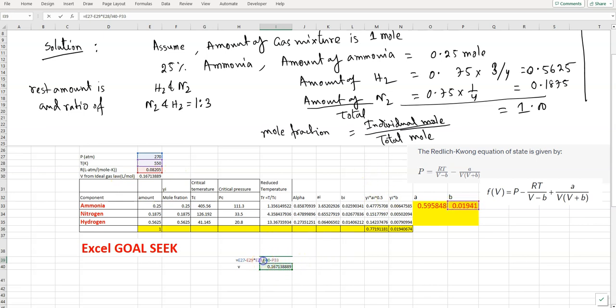V minus b - b is here - so we close the bracket. Then plus a - a is here - divided by V times (V plus b).